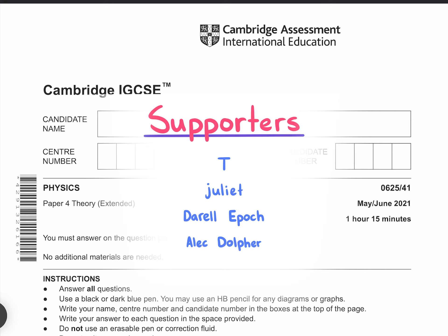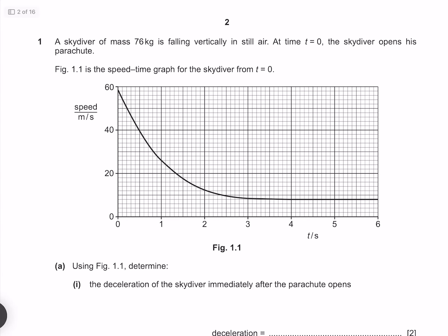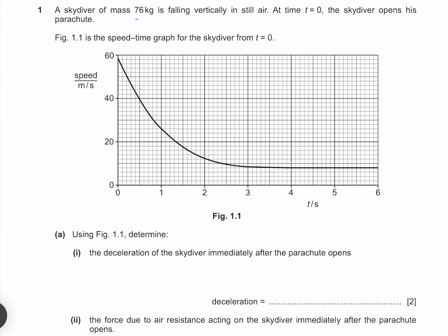In this video I'll be going through the 2021 May June IGCSE Physics Theory extended paper. A skydiver of mass 76 kilograms is falling vertically in still air. At time t equals zero, the skydiver opens his parachute. Figure 1.1 is the speed-time graph for the skydiver from t equals zero.